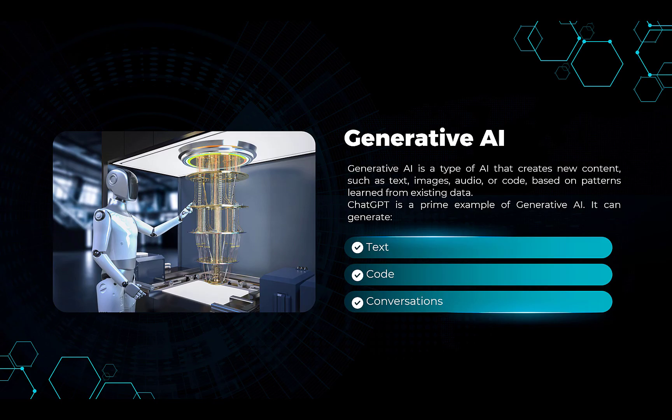In terms of text, ChatGPT can write documentation, generate test cases, explain code, and even create bug reports. For code, it can write code, optimize code, and explain code snippets for automation testing. For conversation, ChatGPT can simulate test scenarios and provide conversational responses to testing queries.